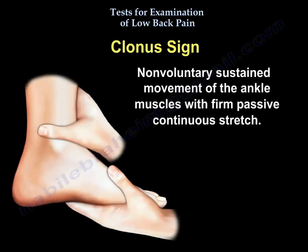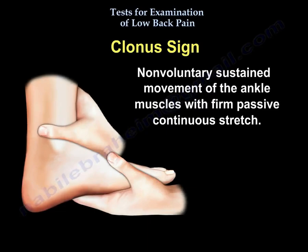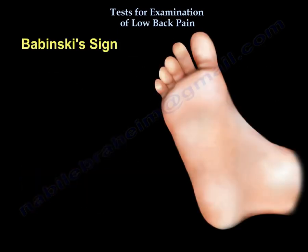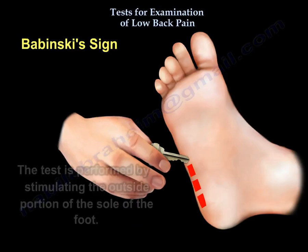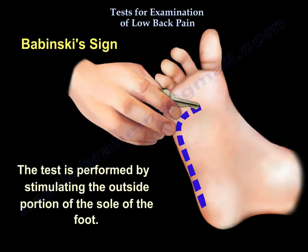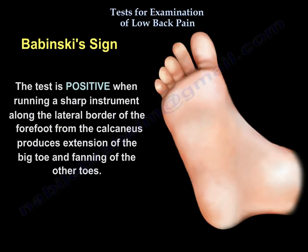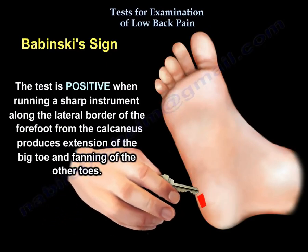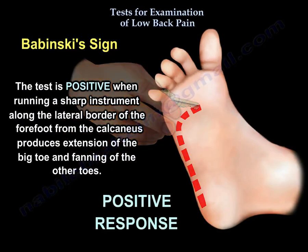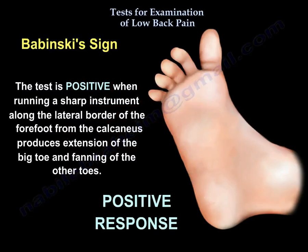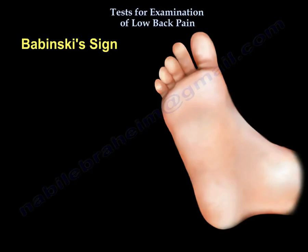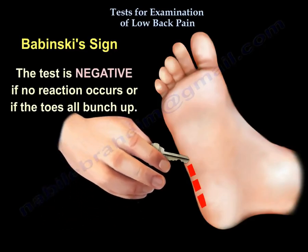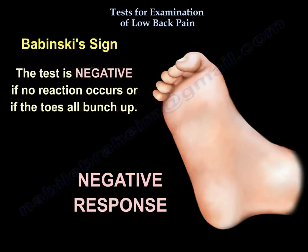To check for Clonus: look for non-voluntary sustained movement of the ankle muscles with firm passive continuous stretch. To check for the Pepinowski sign: stimulate the outside part of the sole of the foot. The test is positive when running a sharp instrument along the lateral border of the forefoot from the calcaneus produces extension of the big toe and fanning of the other toes. The test is negative if no reaction occurs or if the toes all curl up.